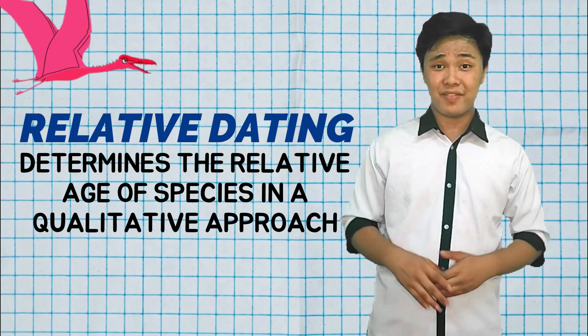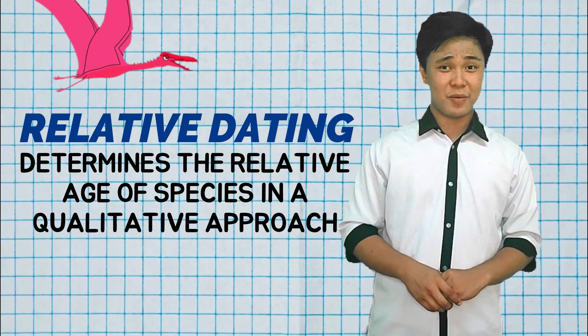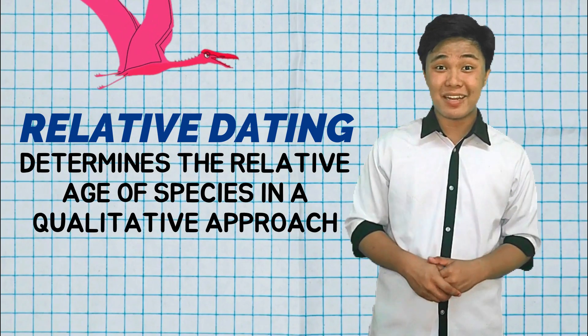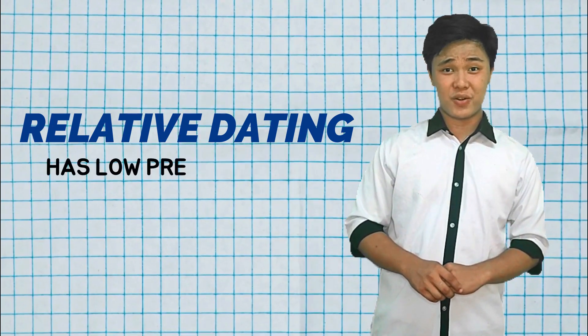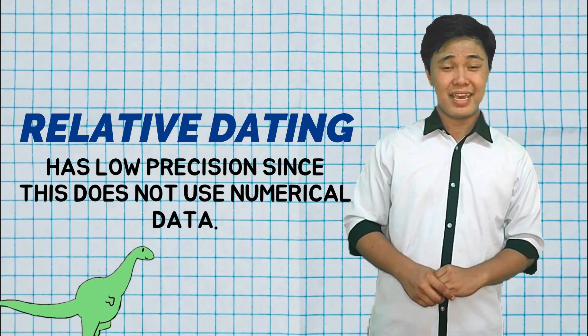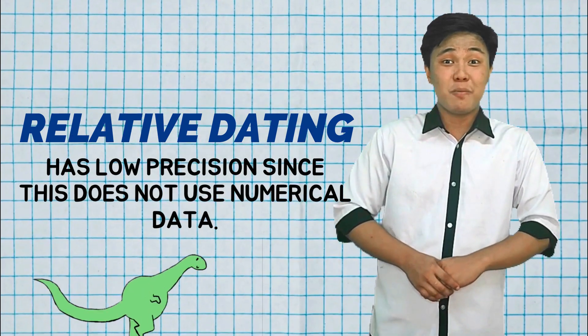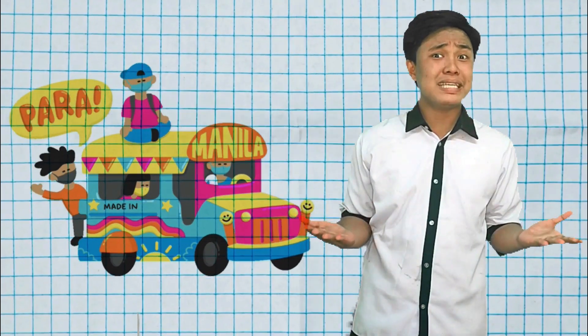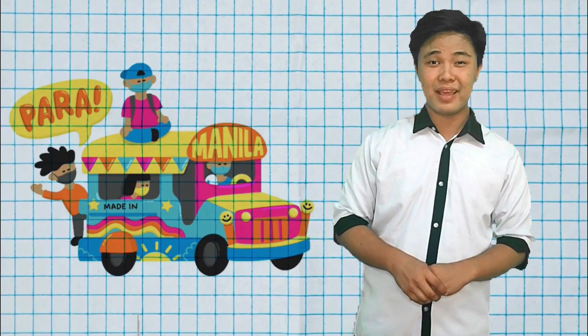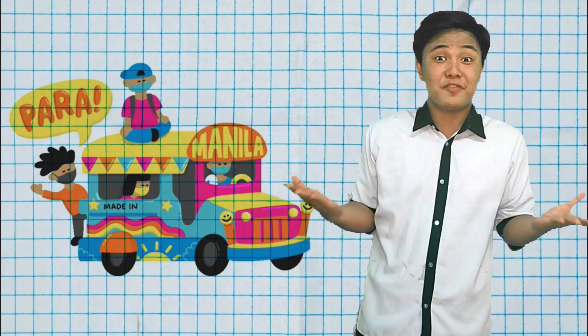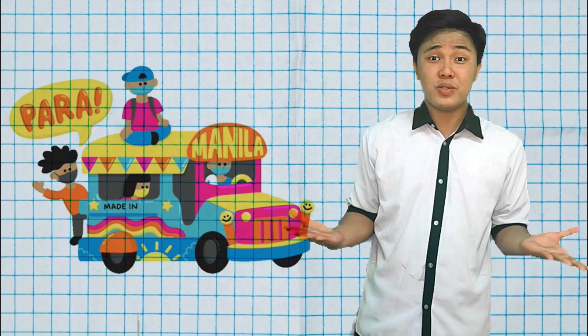In determining the geologic time, we can use relative and absolute dating. Relative dating determines the relative age — it's a qualitative approach and works better for sedimentary rocks. It only tells which species occurred first, and therefore has low precision since it doesn't use numerical data. I remember when I experienced it: I was sitting beside the doorway because I came in later, and the passengers sitting at the frontmost end were those who came in first.